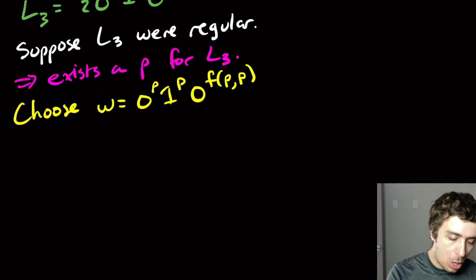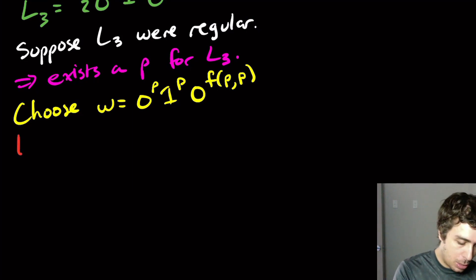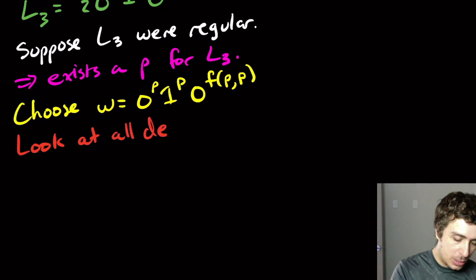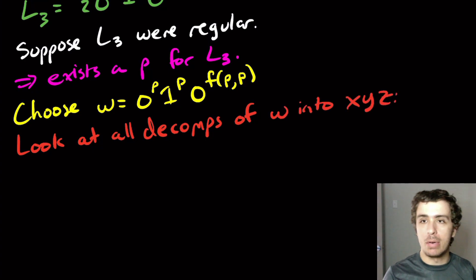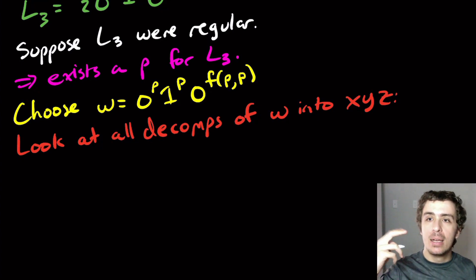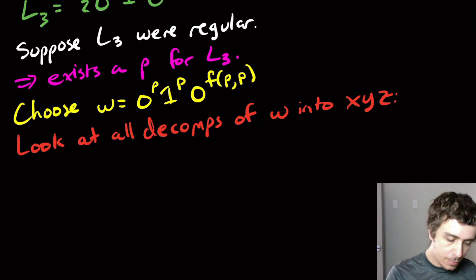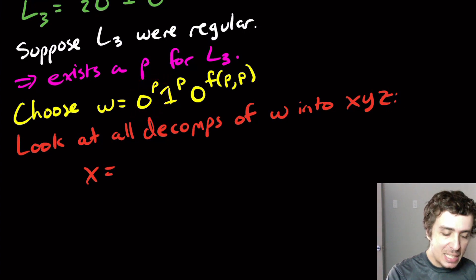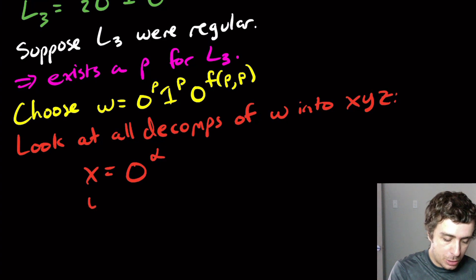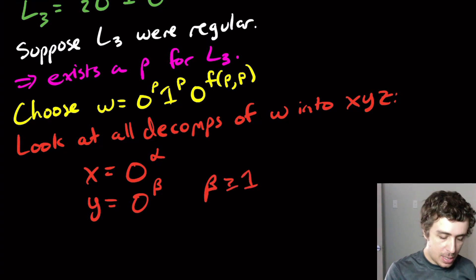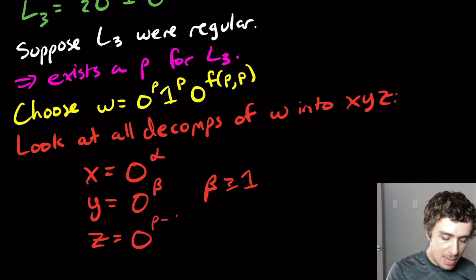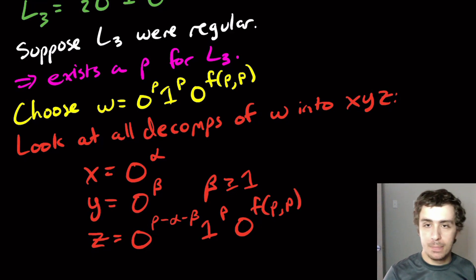Now we look at all decompositions of w into x, y, and z according to the two pumping lemma rules: the length of xy is at most P, and y is non-empty. Since the string starts with P zeros, x and y are both only zeros. Say x has alpha zeros, y has beta zeros where beta is at least one, and z is the rest of the string: zero to the P minus alpha minus beta, then one to the P, then zero to the F of P and P.